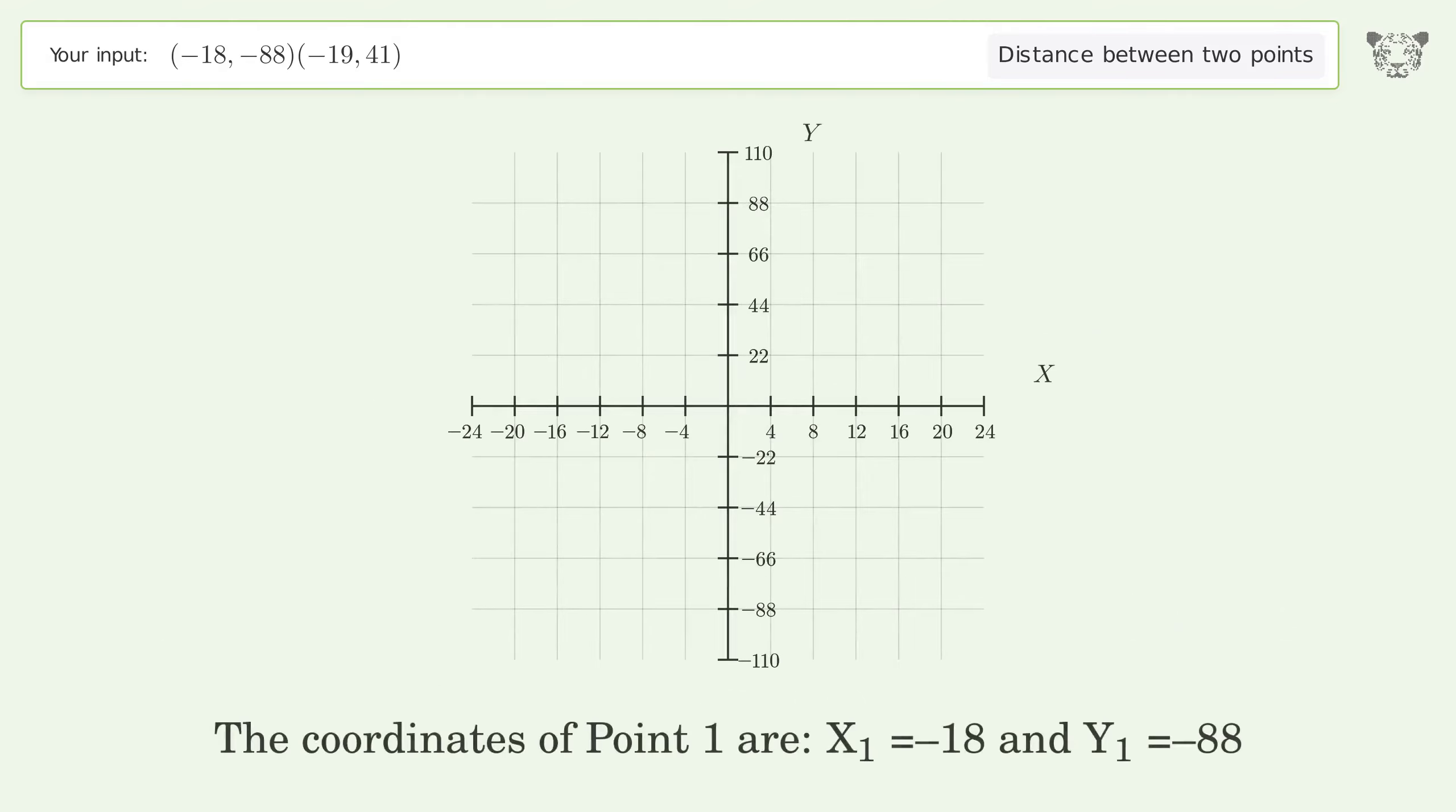The coordinates of Point 1 are x1 equals negative 18 and y1 equals negative 88. The coordinates of Point 2 are x2 equals negative 19 and y2 equals 41.